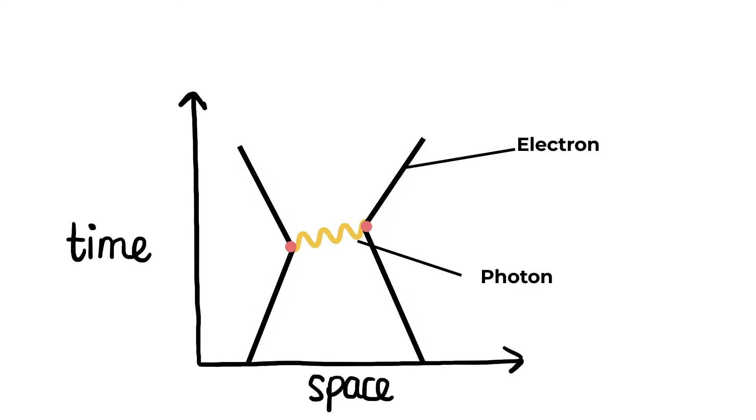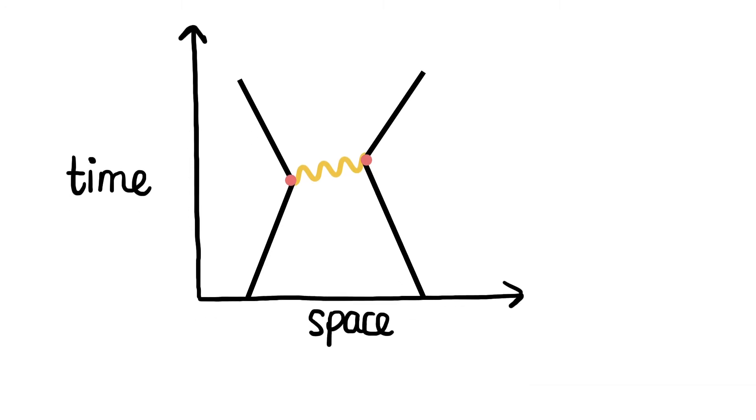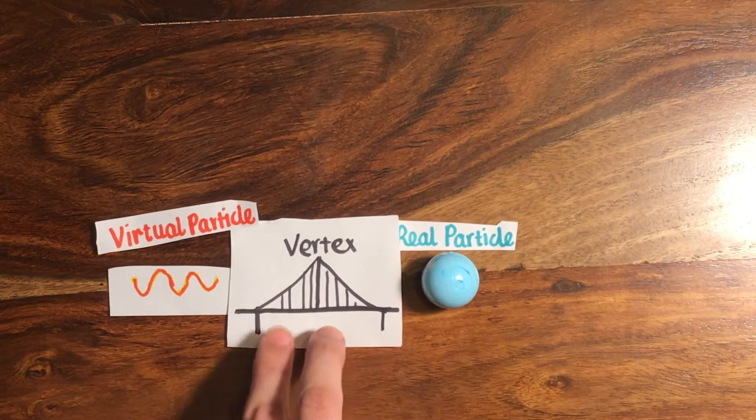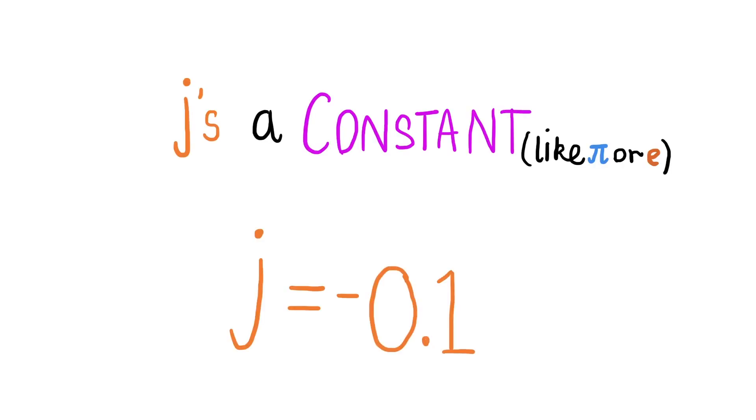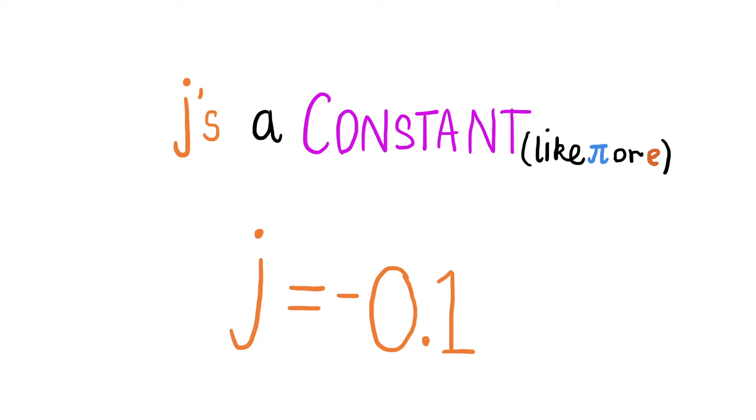Each line you see represents a particle and also an equation. All the electrons have the same equation E and the photons P. These orange dots are vertexes, the junction between the real and virtual world. And it represents a constant, J, which is equal to negative 0.1.